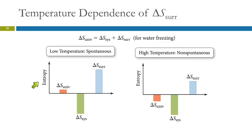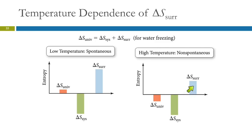At low temperature, the negative change in entropy for the ice freezing is the same as at high temperature. But the positive change in entropy for the surroundings is different. At a higher temperature, the change is less because it's Q divided by T. Q is the amount of heat being transferred — that's the same, but the temperature is changing. So this is still a positive number, but it's smaller. When you add these two together, you get a negative. So at a higher temperature, the freezing of ice is not spontaneous. At a lower temperature, it is.